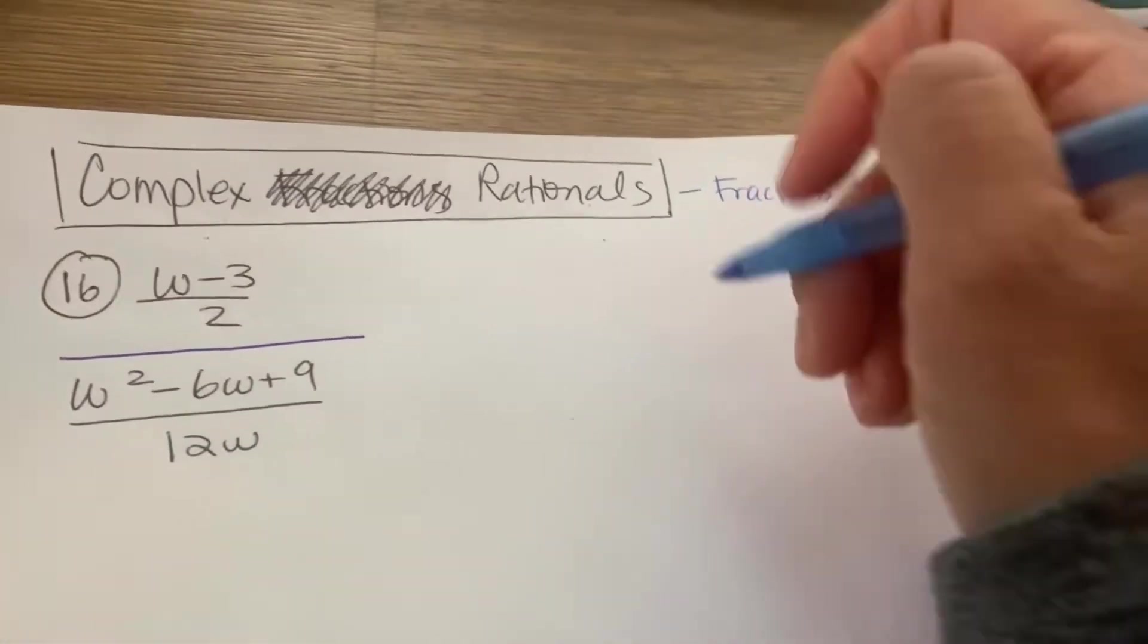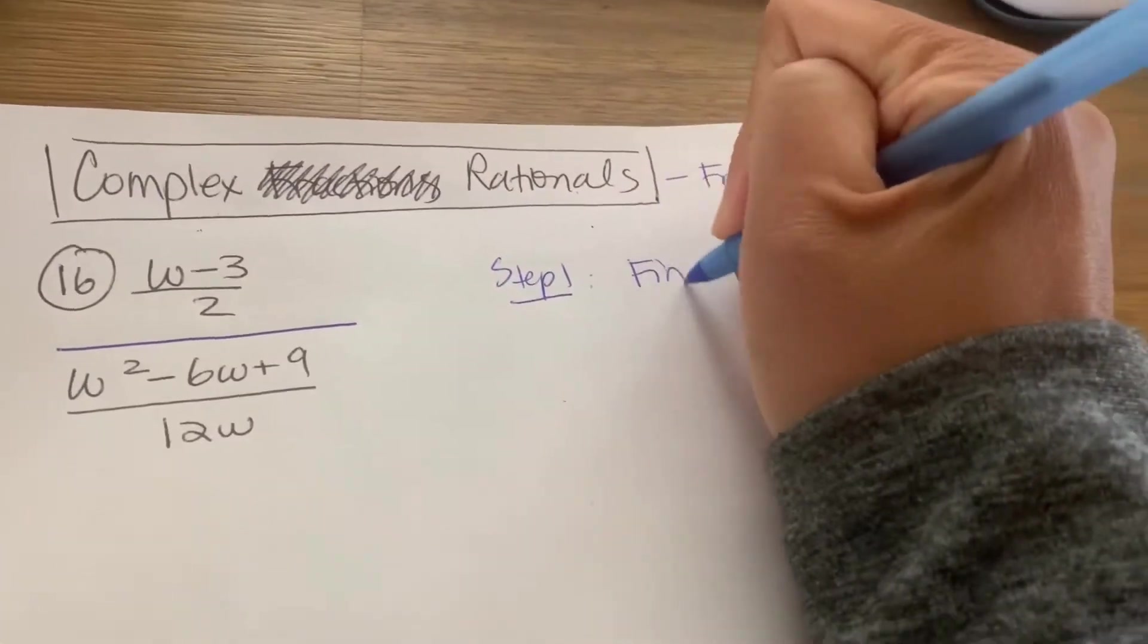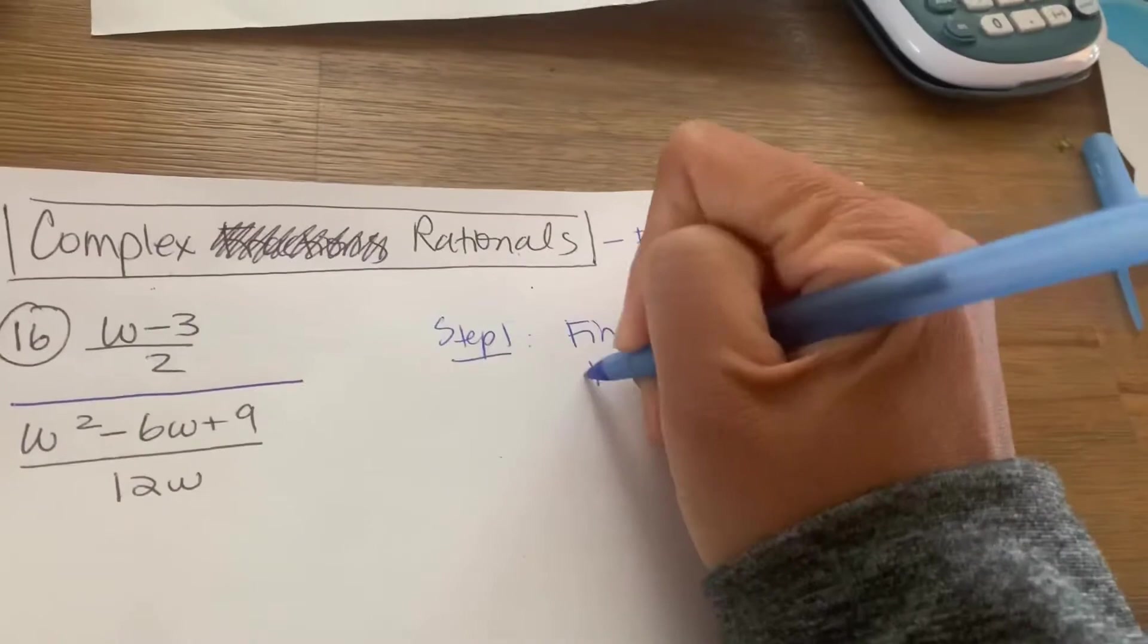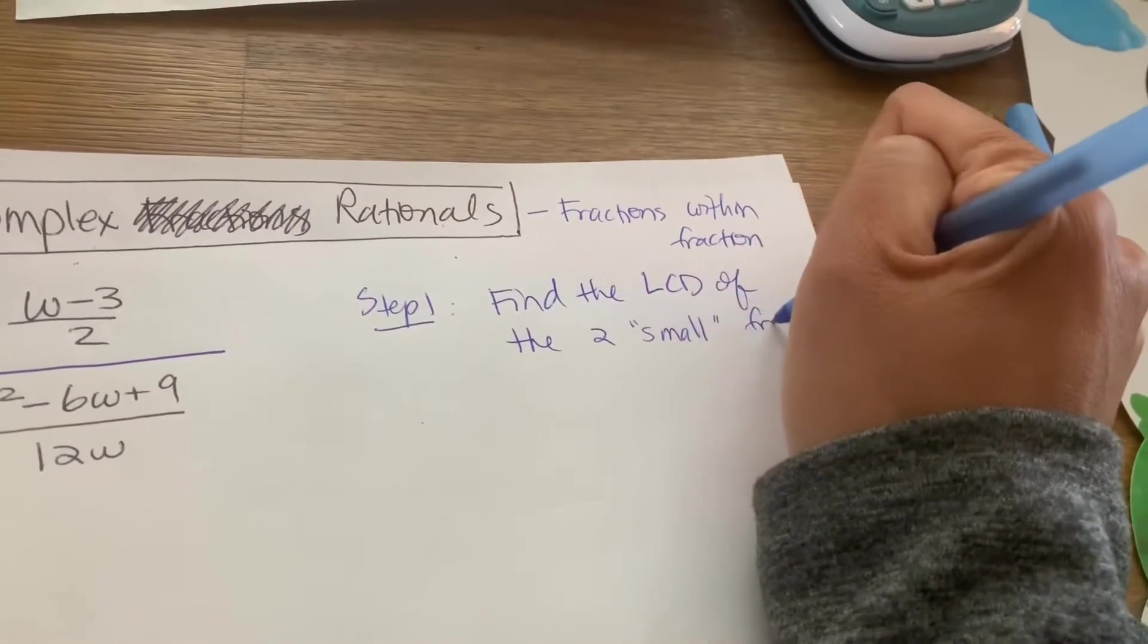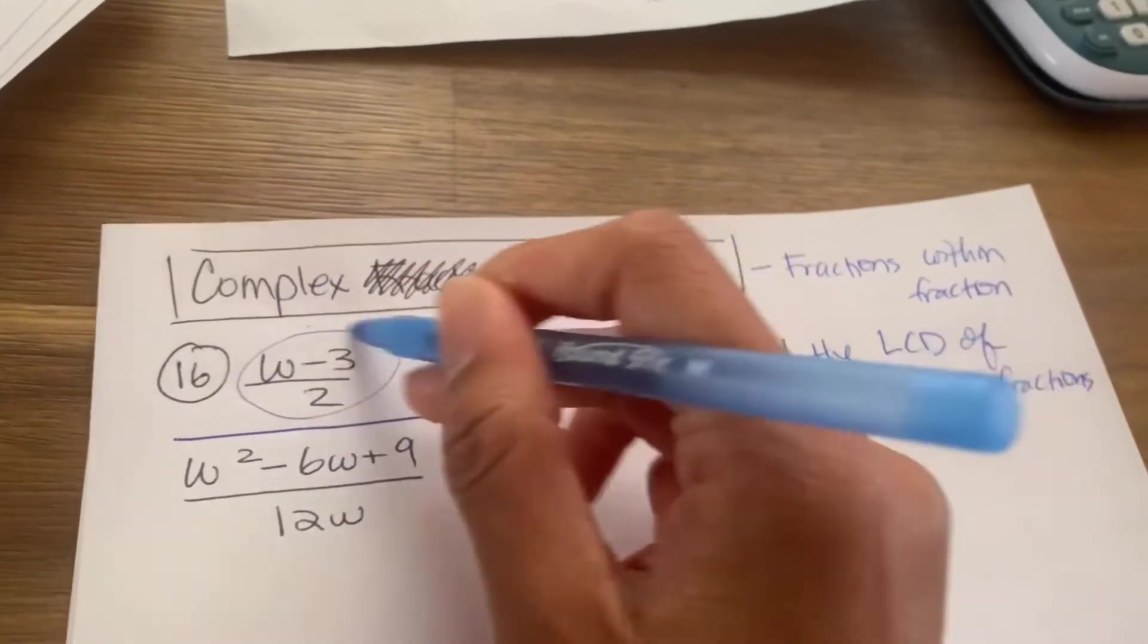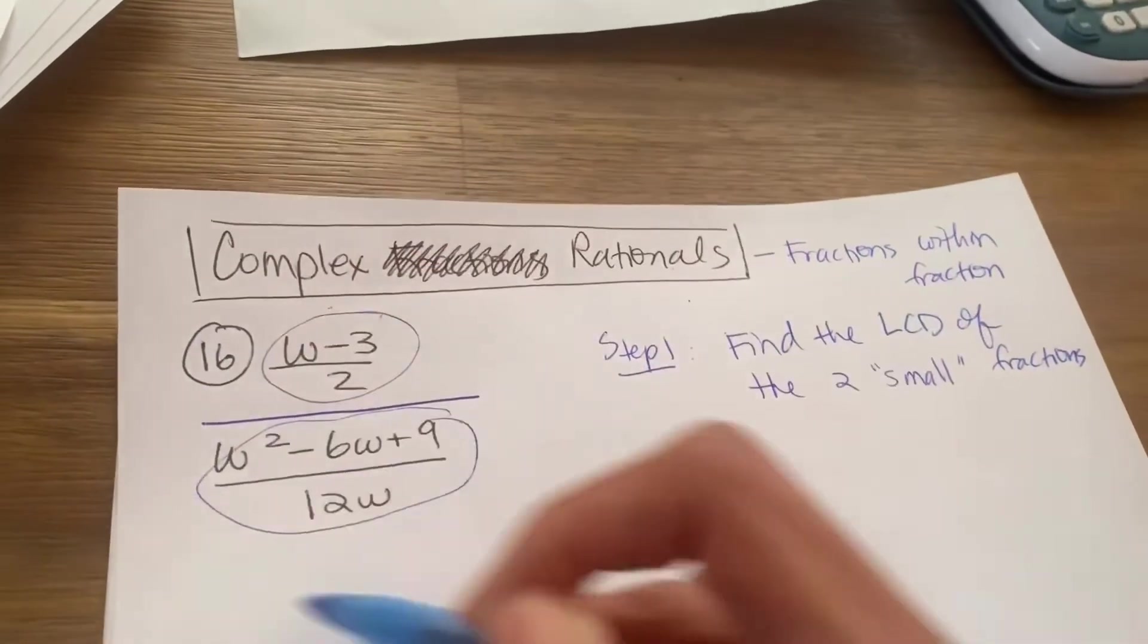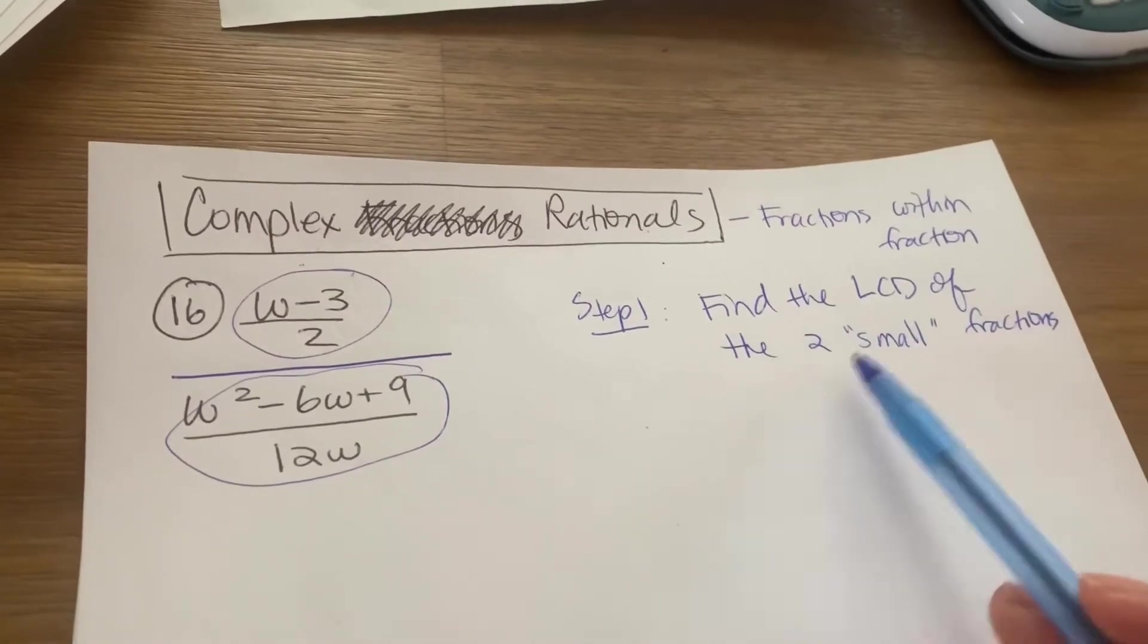So here, step one, I am going to find the lowest common denominator of the two small, quote unquote, small fractions, right? The small fractions meaning here's a small fraction, and here's another small fraction. And then there's the big fraction, right? There's a big fraction out here. So find the lowest common denominator of the two small fractions.